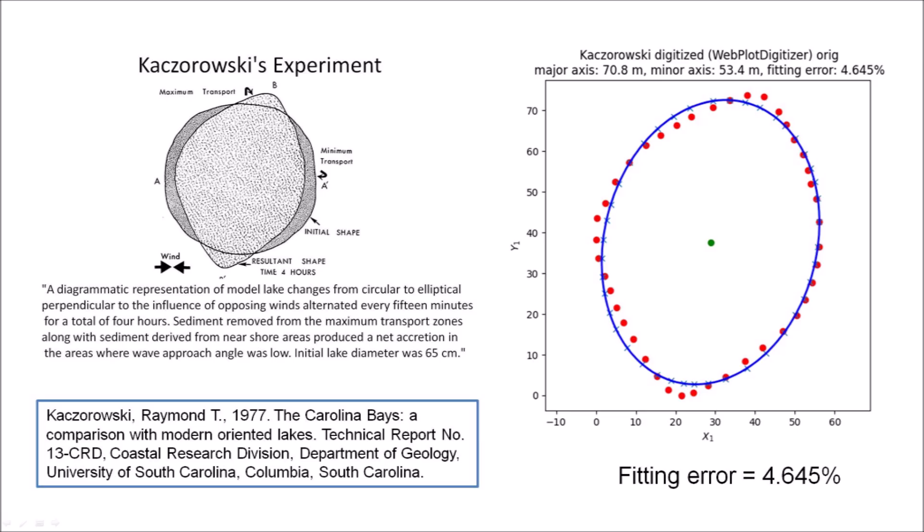The image from Kaczorowski's 1977 thesis, where he claimed that the model lake changed from circular to elliptical, was digitized using Webplot Digitizer. Fitting the points along the resultant shape with an ellipse produces a fitting error of 4.645%, which is much higher than the fitting errors for the Carolina Bays.